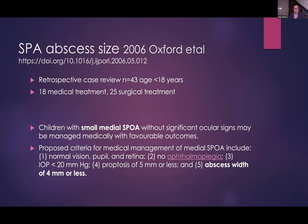Looking at a study in 2006 by Oxford and colleagues of 43 patients, retrospective, less than 18 years: 18 patients had medical treatment without surgery, 25 had surgical treatment. The children had no significant ocular signs. Their proposed criteria for medical management was normal vision, pupil and retina, no ophthalmoplegia. They measured intraocular pressure less than 20 millimetres of mercury. They allowed for an element of proptosis of five millimetres, and an abscess width of less than four millimetres. We have to just be careful about our criteria.